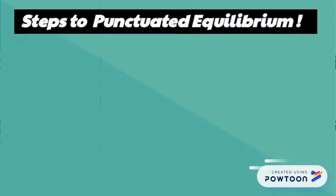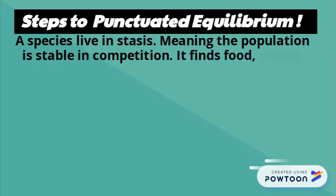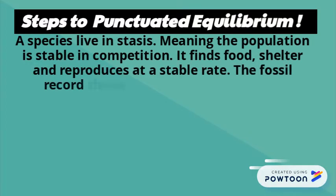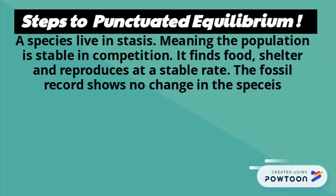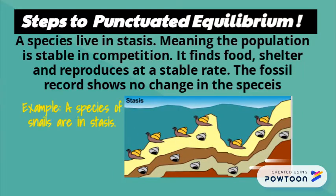The first step is finding a species in stasis. Stasis means the population is stable in finding resources and being able to reproduce. The species we're going to look at is a species of snails.